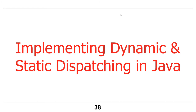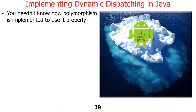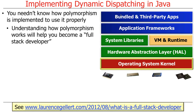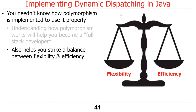The next thing to cover is how this stuff is actually done under the hood — it seems like magic, but it's pretty cool. Knowing how the virtual machine works will make you a more effective full-stack developer and help you strike a balance between flexibility and efficiency, which is often a design trade-off. When your Java code is run through the Java compiler, javac, it spits out bytecode. The bytecode has a bunch of opcodes, and one of them is called invokeVirtual, which implements dynamic dispatch or dynamic dispatching.